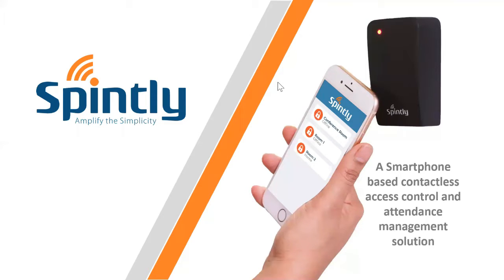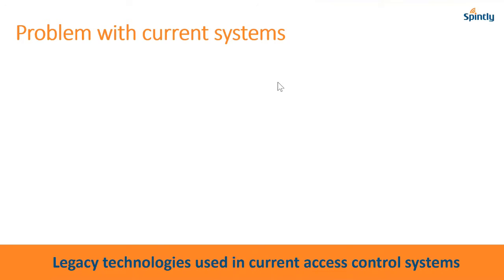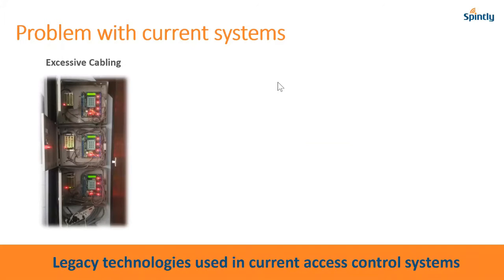When we started the company, we found there were a few issues with the way access control systems were being deployed. One issue was a huge central controller typically used in all access control systems, which occupies a large cabinet. This is one of our actual deployments where we replaced a wired system with our wireless system. If you have 20 doors, you'll have a rack full of cabinet controllers in the server room, connected to each reader on all the doors.